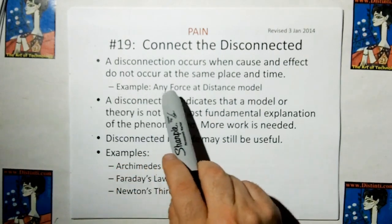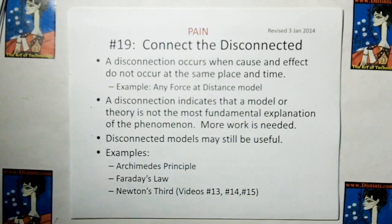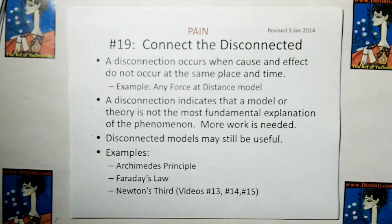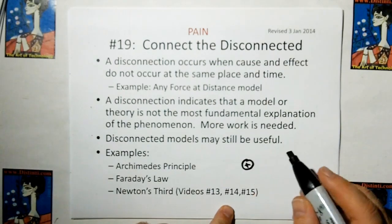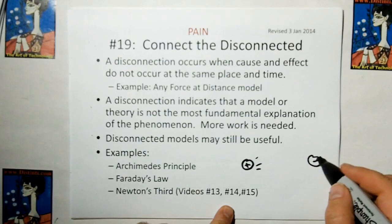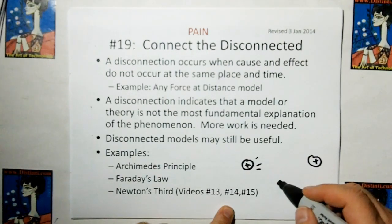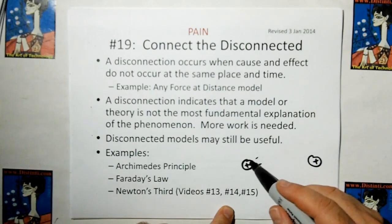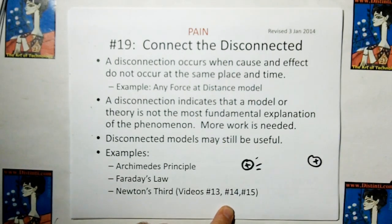And what does this mean? A disconnection occurs when cause and effect do not occur at the same place and time. For example, that would be any force at distance model. Because if we take Coulomb's Law, if we have a charge over here, and it's going to emit an electric field which affects another charge over here. The problem with it is that what occurs over here and what occurs over here happens at different points in space.